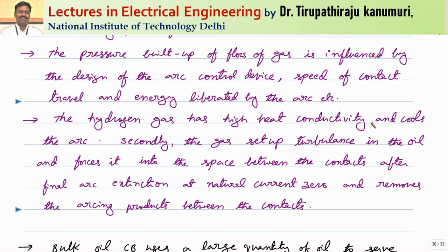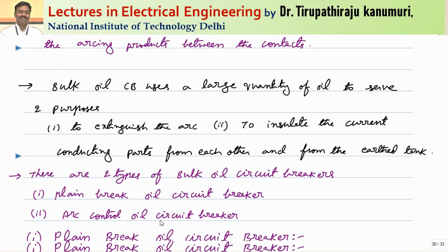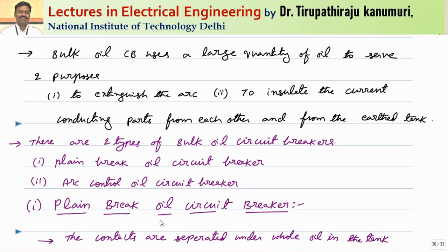The hydrogen gas has high heat conductivity and cools the arc. Secondly, the gas sets up turbulence in the oil and forces it into the space between the contacts after the final arc extinction at natural current zero, thereby removing the arcing products from the contacts. This bulk oil circuit breaker uses a large quantity of oil — that is why it is called a bulk oil circuit breaker. It serves two purposes: first, to extinguish the arc; second, to insulate the current-carrying parts from each other.